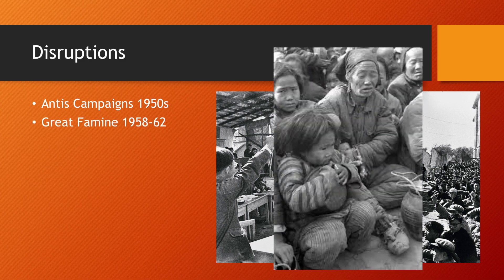There was also the Great Famine from 1958 to 1962, where 45 million people died. So, was the health care provision in the countryside significant enough to counteract the detrimental effects of the Great Famine? Not really. The Great Famine, a human tragedy of epic proportions, made the health care improvements negligible.